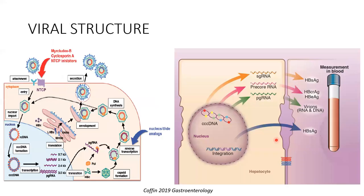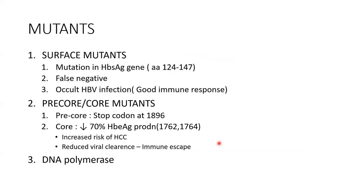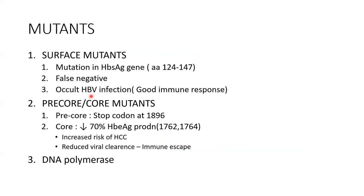Mutations can occur at each level. A mutation at the surface antigen level is called a surface mutant. A pre-core mutant occurs when mutation prevents E antigen expression, making the patient E antigen negative. There can also be a core promoter mutant, where the promoter region of the core is mutated, reducing E antigen production by 70%. There can also be a mutation in the DNA polymerase.